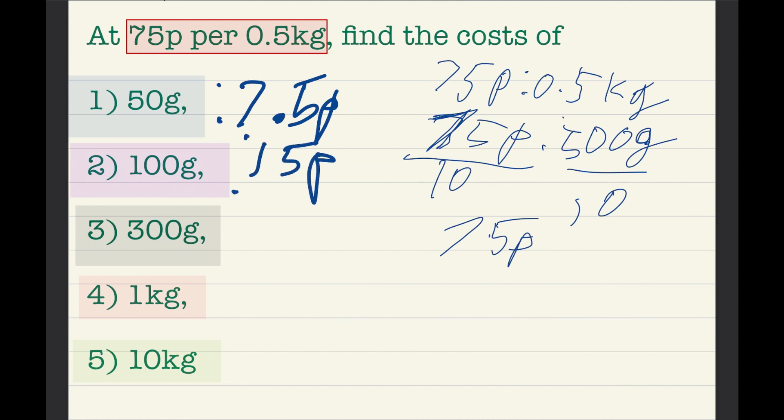For 300 grams, since 100g times 3 equals 300g, we just do 15 times 3, which is 45p.